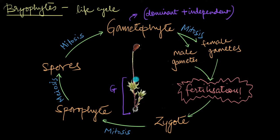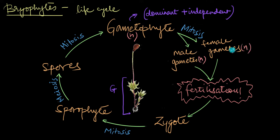This is a moss plant, by the way. This gametophyte generation also has the sex organs — the male and female sex organs — which produce the male and female gametes respectively. We have a haploid gametophyte giving us haploid gametes. When these gametes fuse together, they undergo fertilization and we end up with a diploid zygote. This zygote will undergo several mitotic divisions to give us a diploid sporophyte.